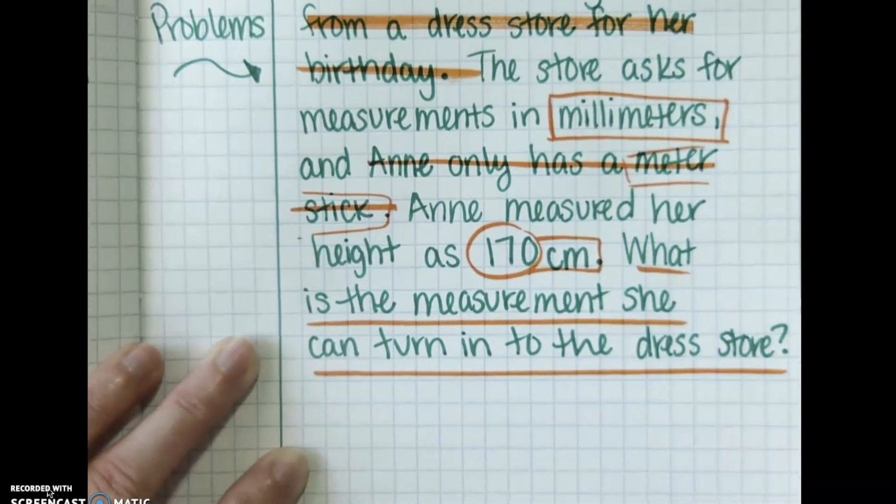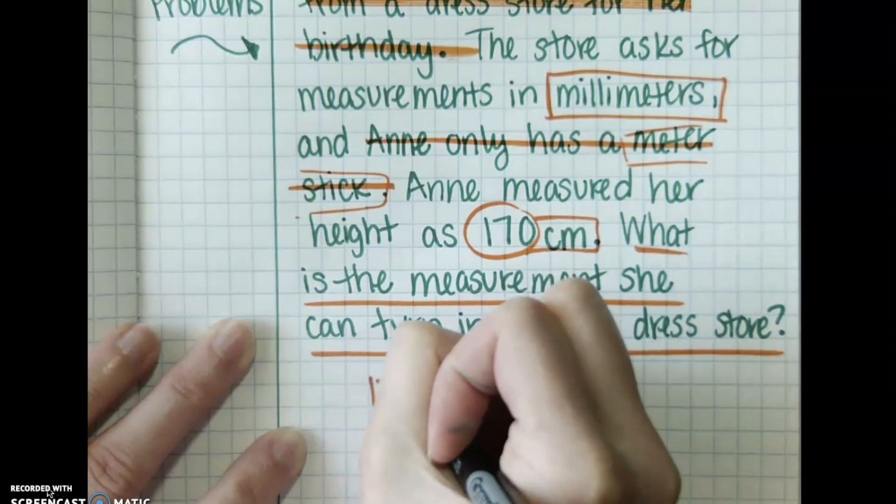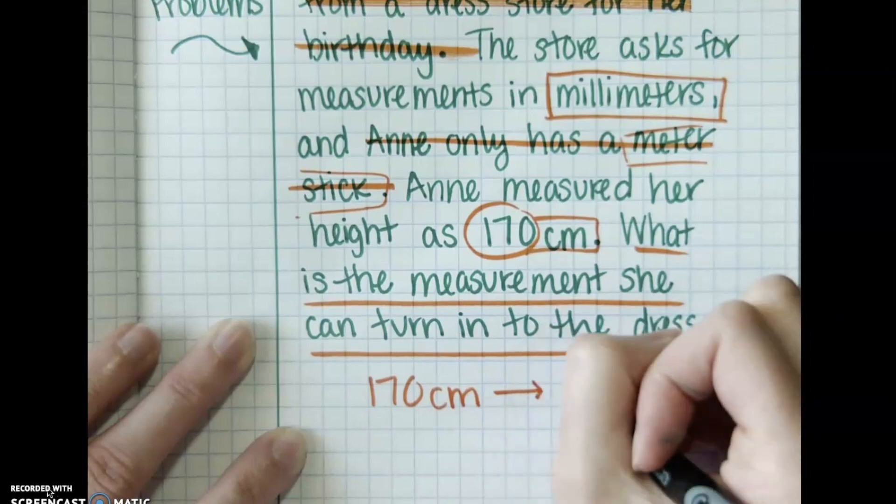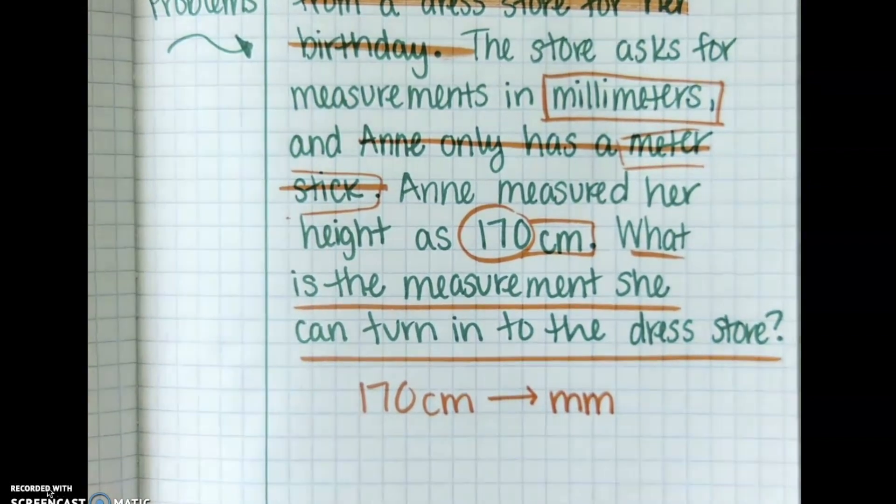So let's move our page down here so we can write our work. We know we have 170 centimeters. That's Anne's height and we're trying to change that into millimeters for the dress store. Seems pretty simple.